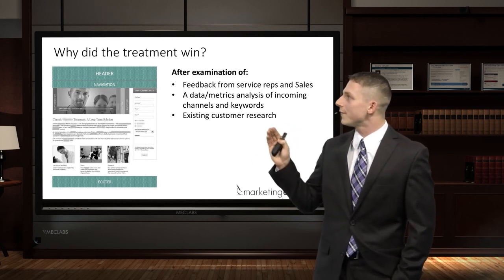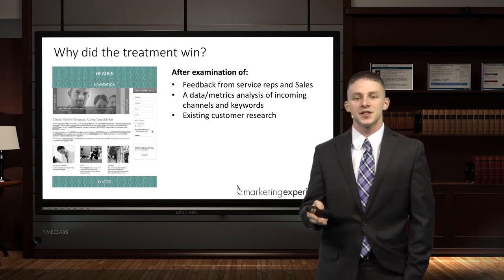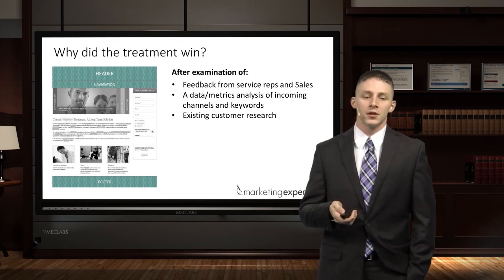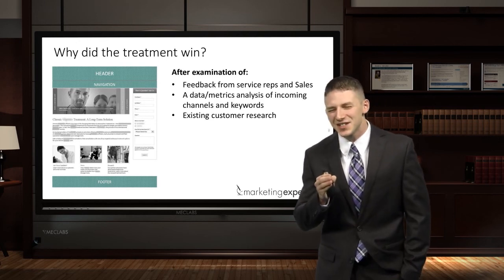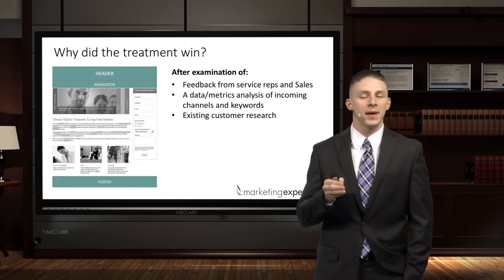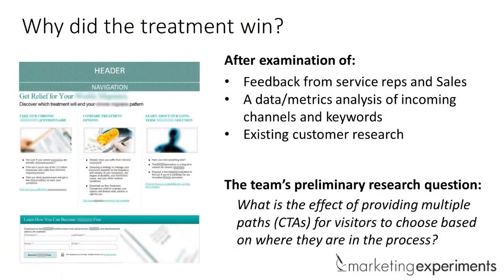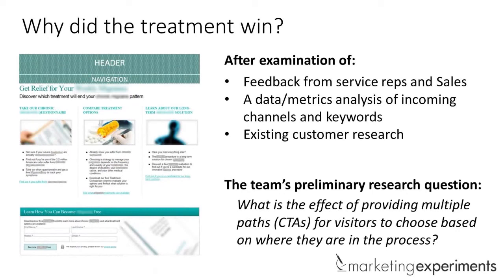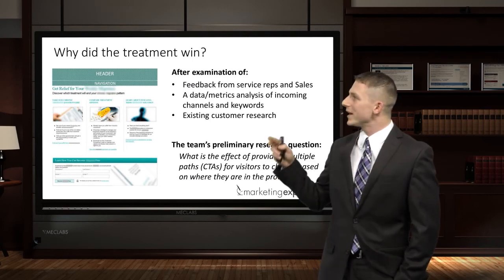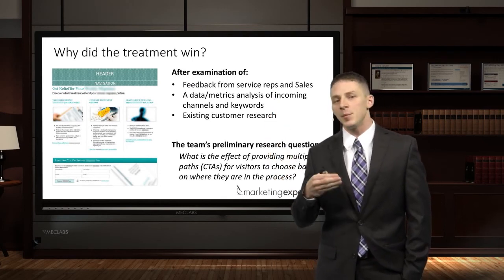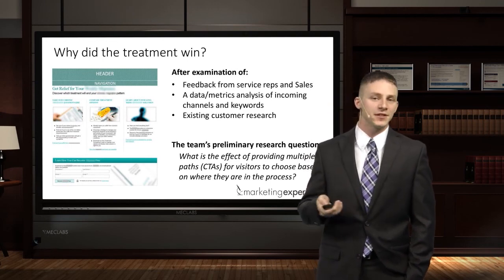So we took the opportunity. We got feedback from service reps and sales, did a data metrics analysis, and looked at existing customer research. What we discovered was that there's a possibility of multiple groups of people coming to the page at the same time, and the page was only serving maybe one of those groups. So our team came up with a hypothesis: what is the effect of providing multiple paths for each of those groups of customers?